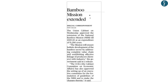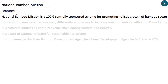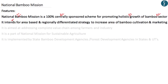The next article from page 10 covers the National Bamboo Mission, which is in the news because the union cabinet approved its extension till 2019–2020. The National Bamboo Mission is a 100% centrally sponsored scheme for promoting holistic growth of the bamboo sector. It intends an area-based, regionally differentiated strategy to increase bamboo cultivation, marketing, and addresses the complete value chain from bamboo farmers to the bamboo industry.